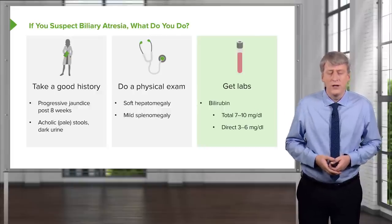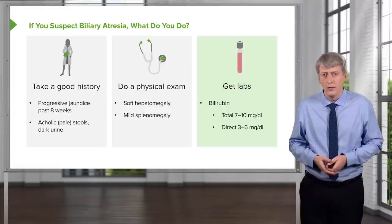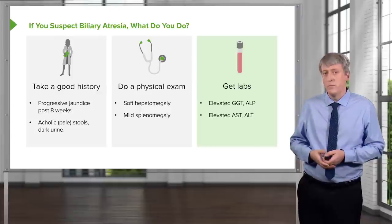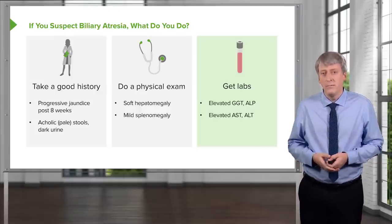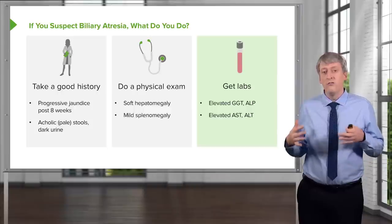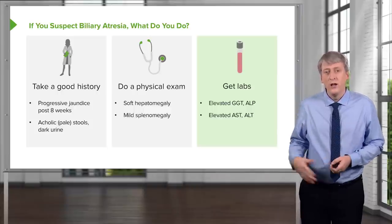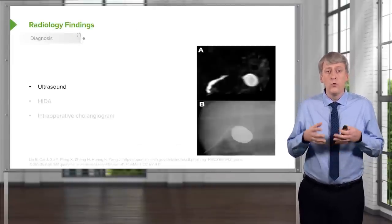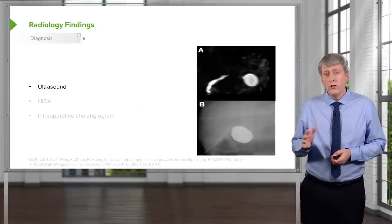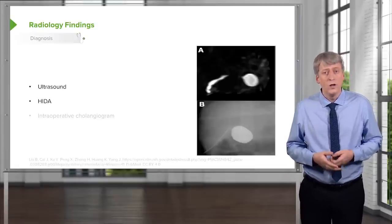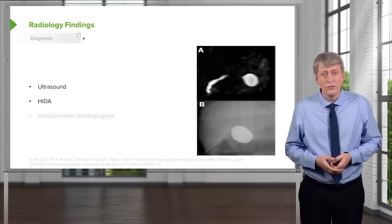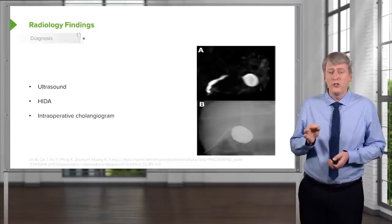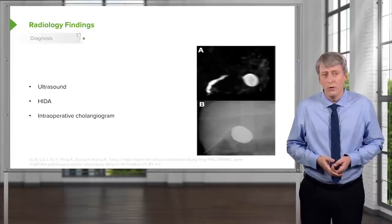This clearly meets criteria for conjugated hyperbilirubinemia. They should have an elevated GGT because of the inflammation to their biliary tract, as well as an elevated alkaline phosphatase. And of course, a bumped AST and ALT as well, as they're now developing hepatotoxicity from the bile backup. We diagnose this condition primarily through ultrasound. If more delineation is required, we can do a HIDA scan, as pictured above, or an intraoperative cholangiogram, which may be useful in determining what type of problem is truly going on.